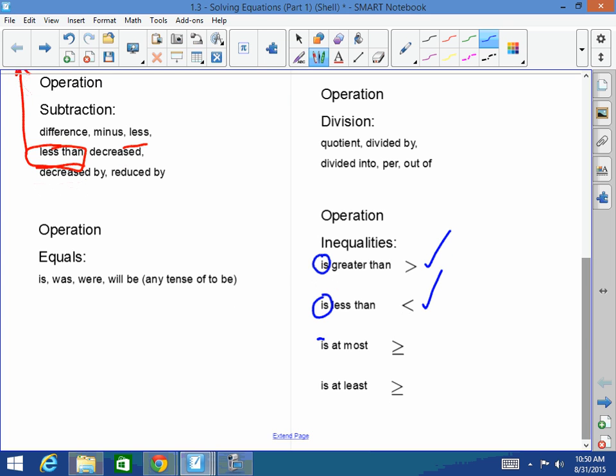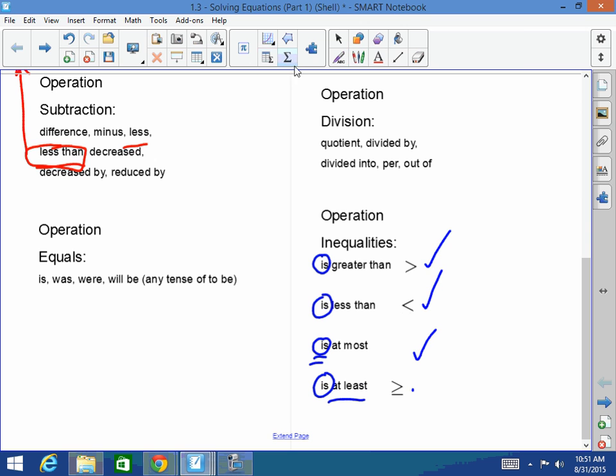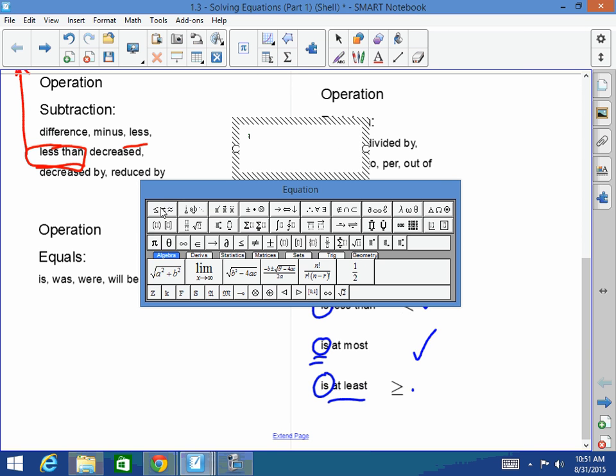Is at most is going to be greater than or equal to. Is at least. Oh, I messed up. I messed up. At most is not this, wrong. At most, it's like Mr. Morrill is at most 42 years old. That means he's that or less. So at most is less than. That is my error and I apologize. I will fix that right now.